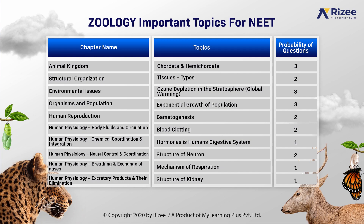In human physiology chemical coordination and integration, the important topic is endocrine glands and hormones released in humans. Probability of questions are 2. In human physiology neural control and coordination, important topic is human neural system, focusing on the structure of neuron. And the probability of questions are 2. In human physiology breathing and exchange of gases, important topic is mechanism of breathing. Probability of questions to be asked are 2.